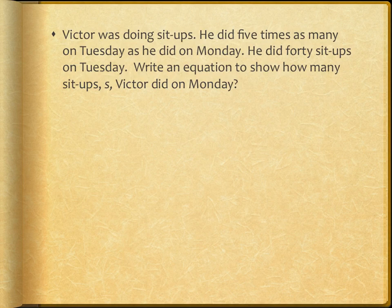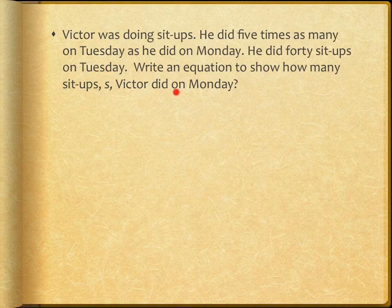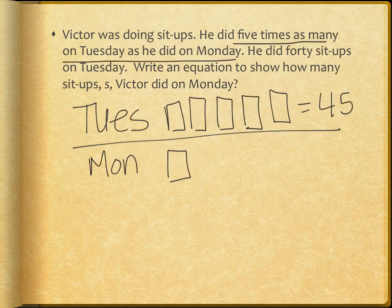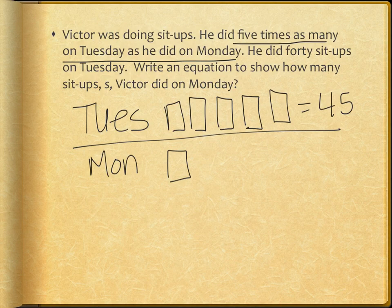Let's look at one more example. Victor was doing sit-ups. He did five times as many on Tuesday as he did on Monday. He did 45 sit-ups on Tuesday. Write an equation to show how many sit-ups, S, Victor did on Monday. I see 'times as many,' so let's set up that comparison model. In my model, I showed Tuesday and Monday with five times as many next to Tuesday as Monday. I know I need to find how many goes in each box to solve for Monday, only I'm not dealing with a total of 45 — only 45 sit-ups for Tuesday, meaning I'm really focusing on the top line of my model for this equation.